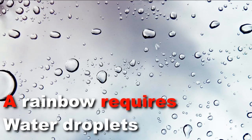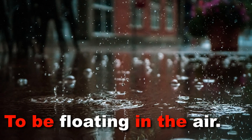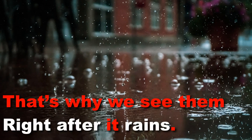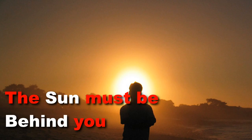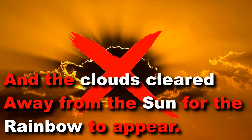A rainbow requires water droplets to be floating in the air. That's why we see them right after it rains. The sun must be behind you and the clouds cleared away from the sun for the rainbow to appear.